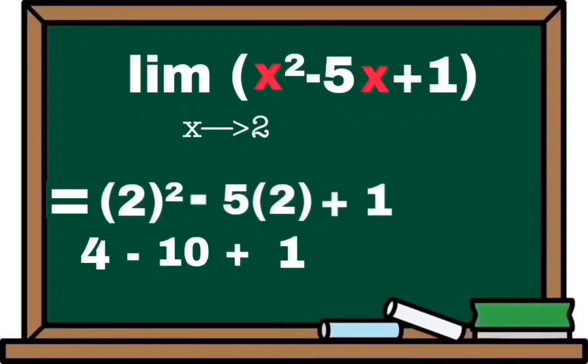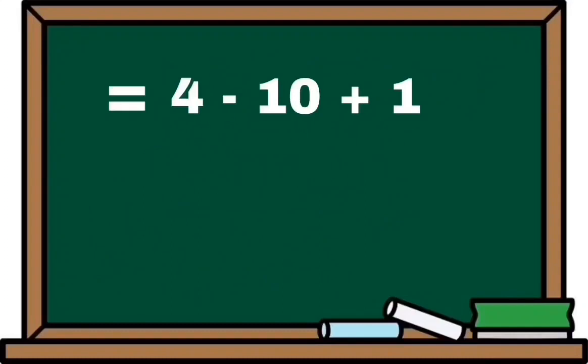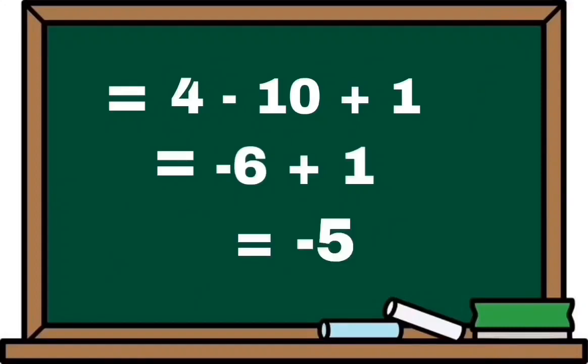Let's simplify it further. 4 minus 10 plus 1 is equal to negative 6 plus 1, and negative 6 plus 1 would be equal to negative 5.